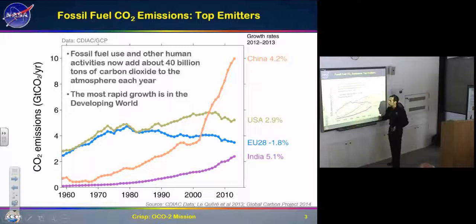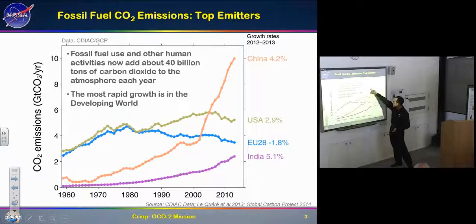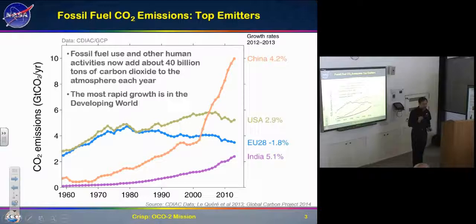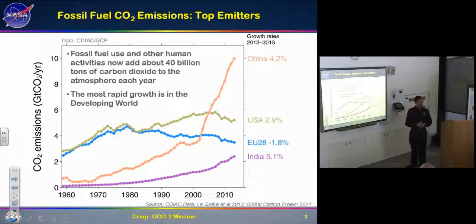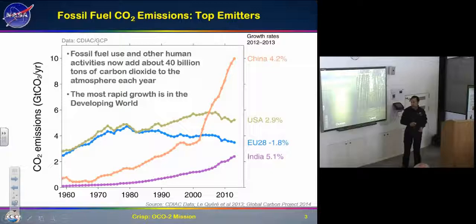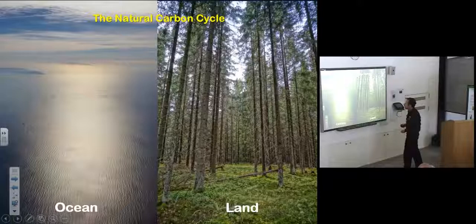We can't really hold this against the developing world — they want the standard of living that we have. Interestingly, in 2012 the per capita emissions in China matched and then surpassed per capita emissions in Europe. But they're not producing to support their own standard of living — they're producing a lot of stuff for us. As human beings, we're not the big players in the natural carbon cycle.